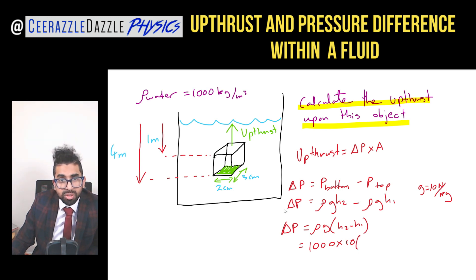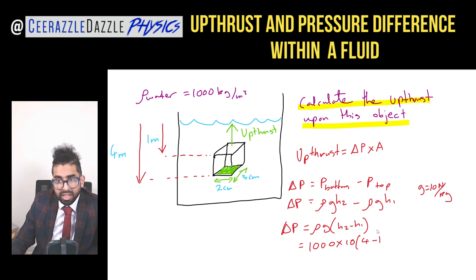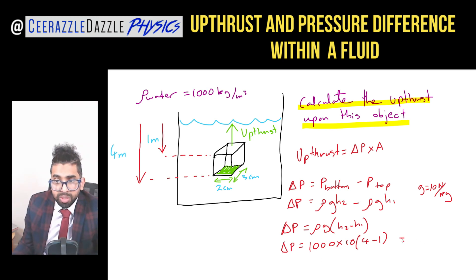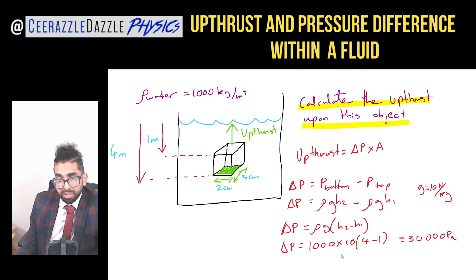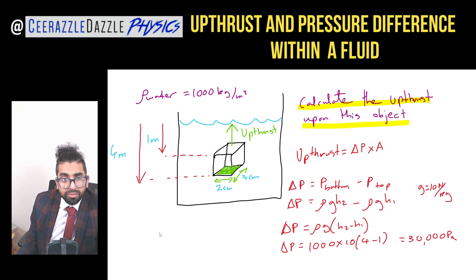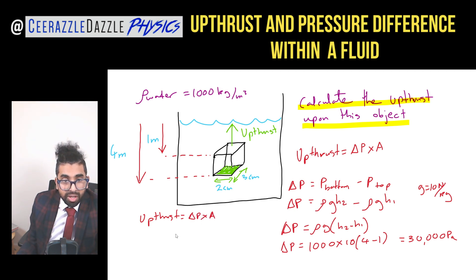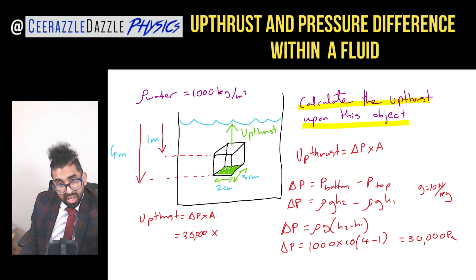Delta p is therefore equal to 1000 times 10 times 3, giving 30,000 pascals. Now for the upthrust: upthrust equals delta p times area, so 30,000 times the area. The area of the square face — don't forget the dimensions are in centimetres, so convert to metres: 0.02 times 0.03, giving an area of 6 times 10 to the minus 4 metres squared.